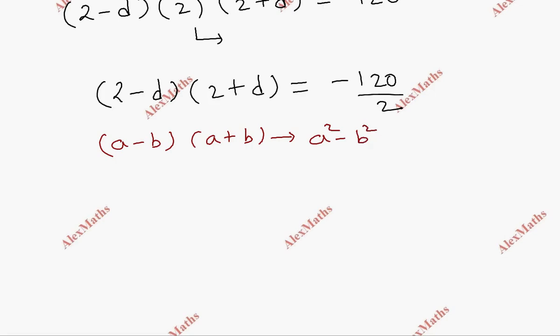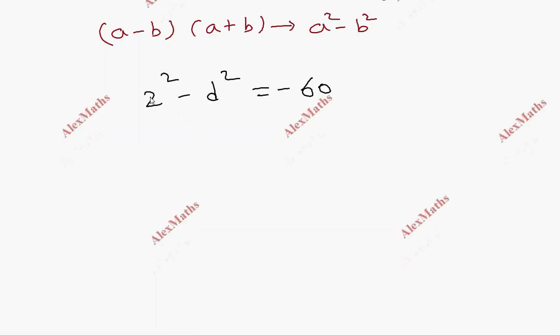So 2 squared minus d squared equals -60. That's 4 minus d squared equals -60.